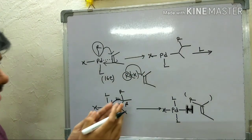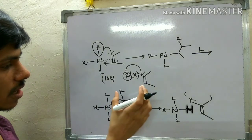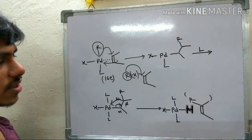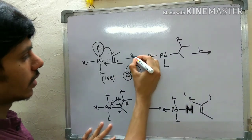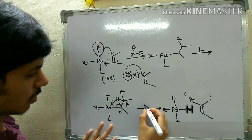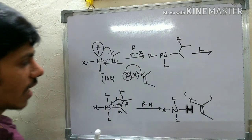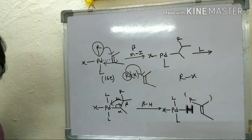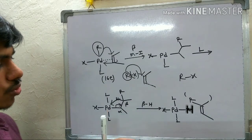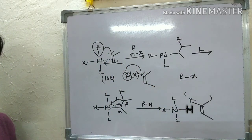This is the general scheme: ligand dissociation, then oxidative addition, then migratory insertion (beta-migratory insertion in this case), followed by beta-hydride elimination to give the product. This general scheme applies to the Heck reaction and many other cross coupling reactions. One important consideration when choosing RX: since beta-hydride elimination is always present in the mechanism, if R itself has a beta hydrogen, it can undergo premature beta-hydride elimination right after oxidative addition, before any useful coupling occurs.